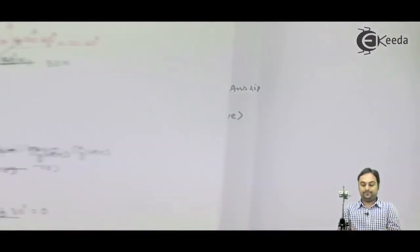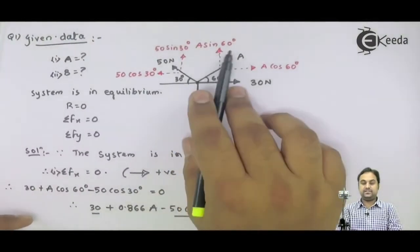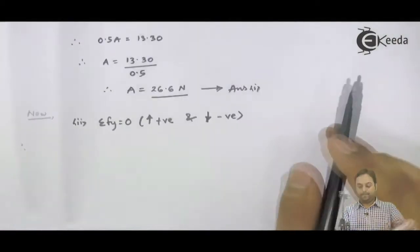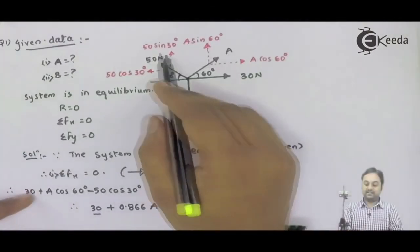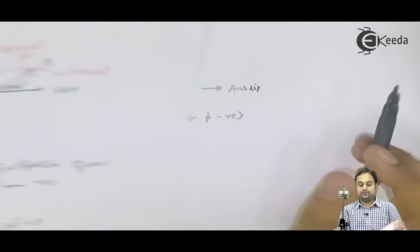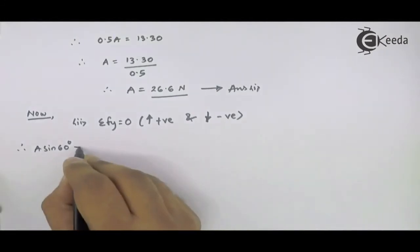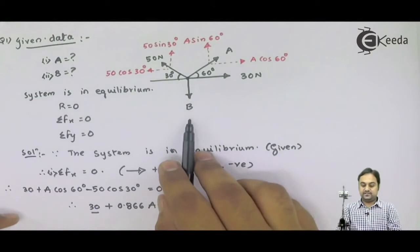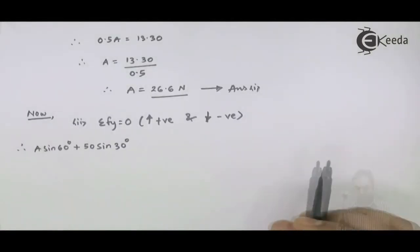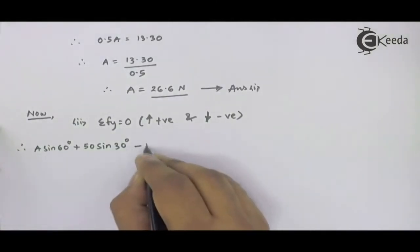Hence here we have A sin 60 as positive upward, 50 sin 30 - this is also upward so positive. Force B is acting downward so negative. Therefore, if I calculate this.